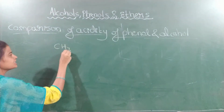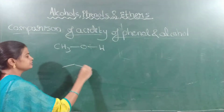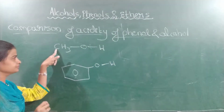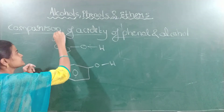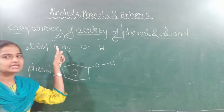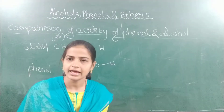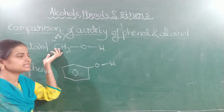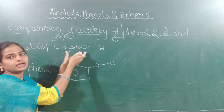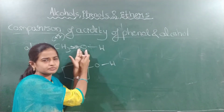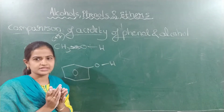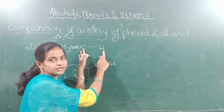I will take an alcohol for example: CH₃OH and phenol (C₆H₅OH). Due to the plus I effect exhibited by the methyl group (or any alkyl group) in the case of alcohol, the shared pair of electrons between the alkyl group and oxygen will move more towards the oxygen. Hence, the electron density on oxygen increases, and as electron density increases, the polarity between oxygen and hydrogen decreases.